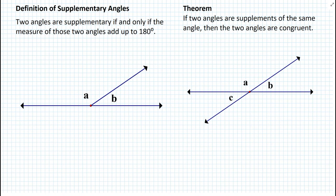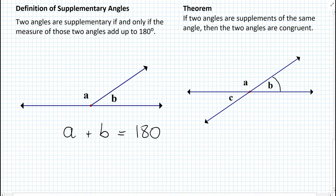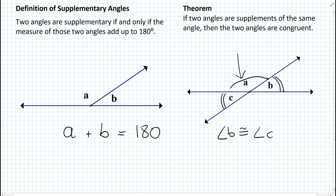For supplementary angles, the definition states: two angles are supplementary if and only if the measures of those two angles add up to 180 degrees — so angle A plus angle B equals 180. The pertaining theorem for supplementary angles goes as follows: if two angles are supplements of the same angle, then the two angles are congruent. From the diagram, angle B is supplementary to angle A, and angle C is also supplementary to angle A, so angle B and angle C must be congruent.